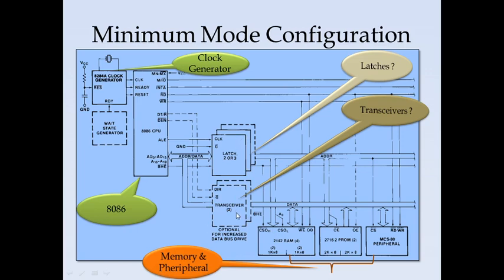Latches and transceivers are placed here because the AD0 to AD15 — these 16 lines — are multiplexed. Meaning these pins will act as data for some period of time and will act as address for some other period of time. So the peripherals need to have the address and data lines separately. Before getting into the details, we will see the functionalities.